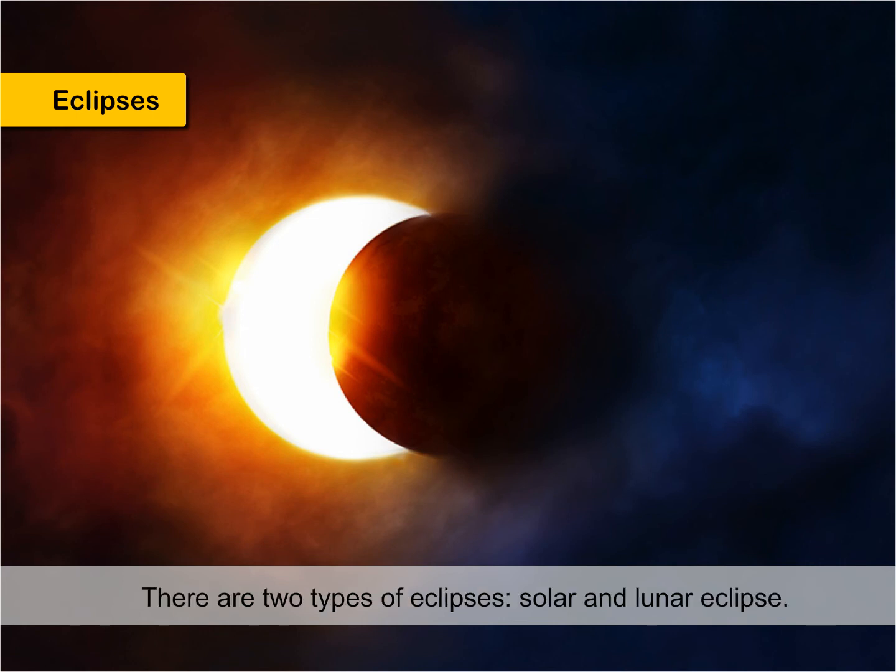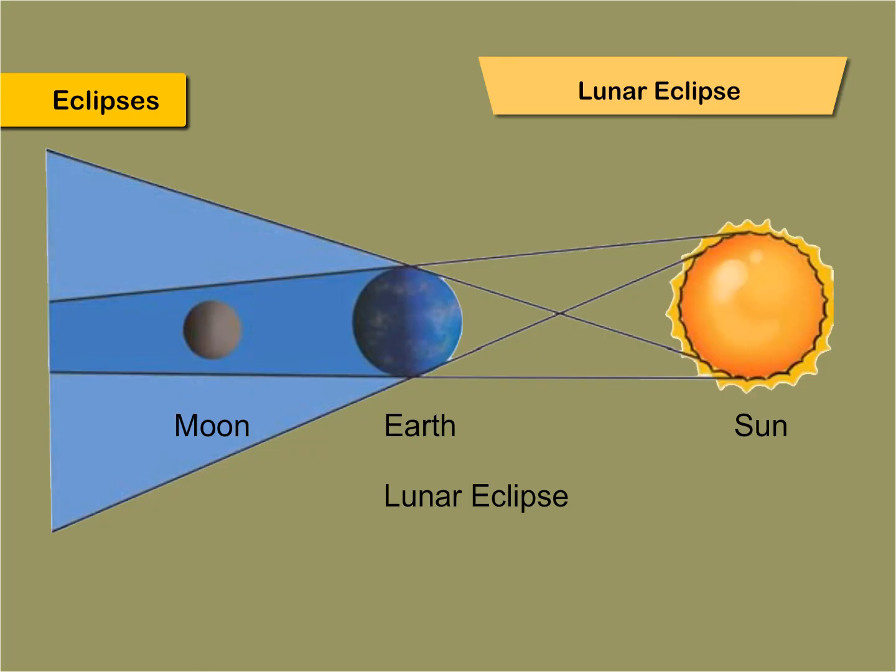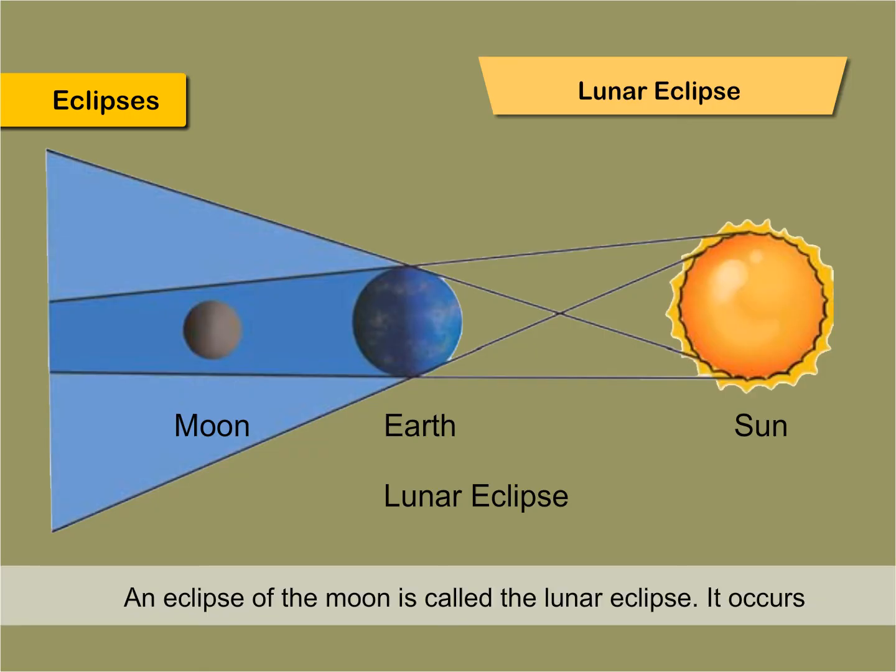There are two types of eclipses: solar and lunar eclipse. Lunar Eclipse: An eclipse of the moon is called the lunar eclipse. It occurs when the earth comes between the sun and the moon. The shadow of the earth falls on the moon, and it is called the lunar eclipse. It occurs only on full moon day and at night.